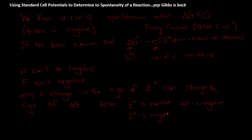When E naught is negative, negative times a negative is a positive, that's going to make delta G positive. When delta G is positive, we know that our reaction is not spontaneous.